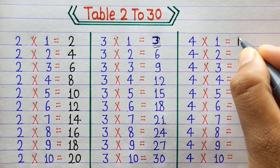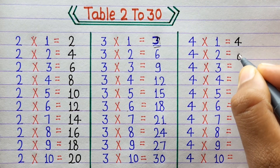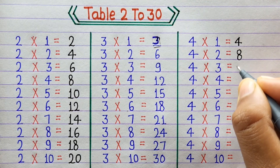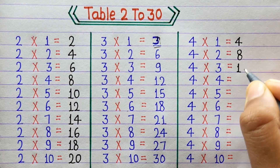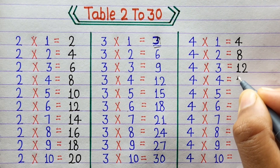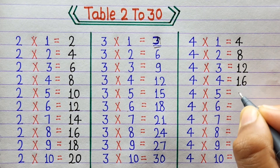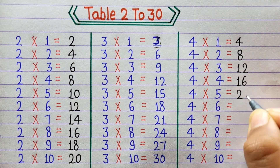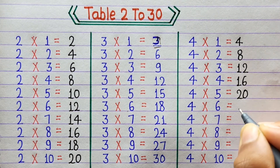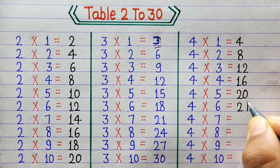4×1=4, 4×2=8, 4×3=12, 4×4=16, 4×5=20, 4×6=24.